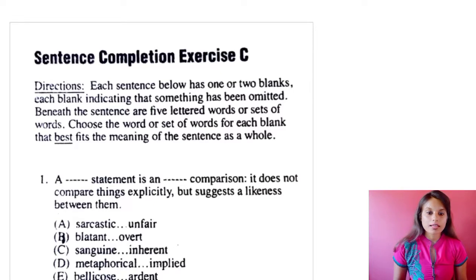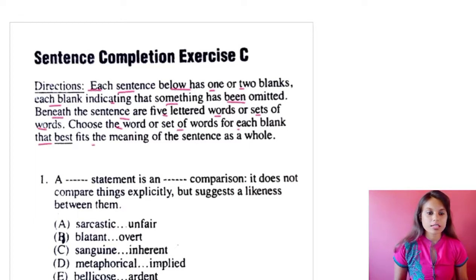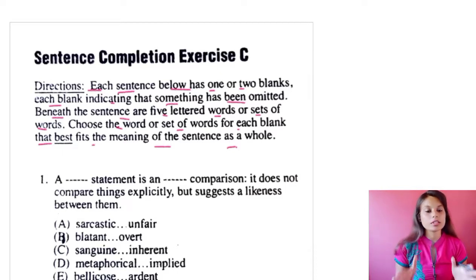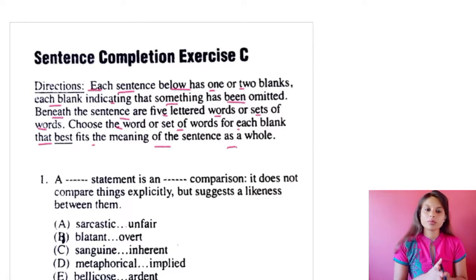The direction is given as: each sentence below has one or two blanks, each blank indicating that something has been omitted. Beneath the sentence are five lettered words or sets of words. Choose the word or set of words for each blank that best fits the meaning of the sentence as a whole. Basically, you will be given fill-in-the-gaps just like in your school days, and you need to fill up with the correct option from five choices.